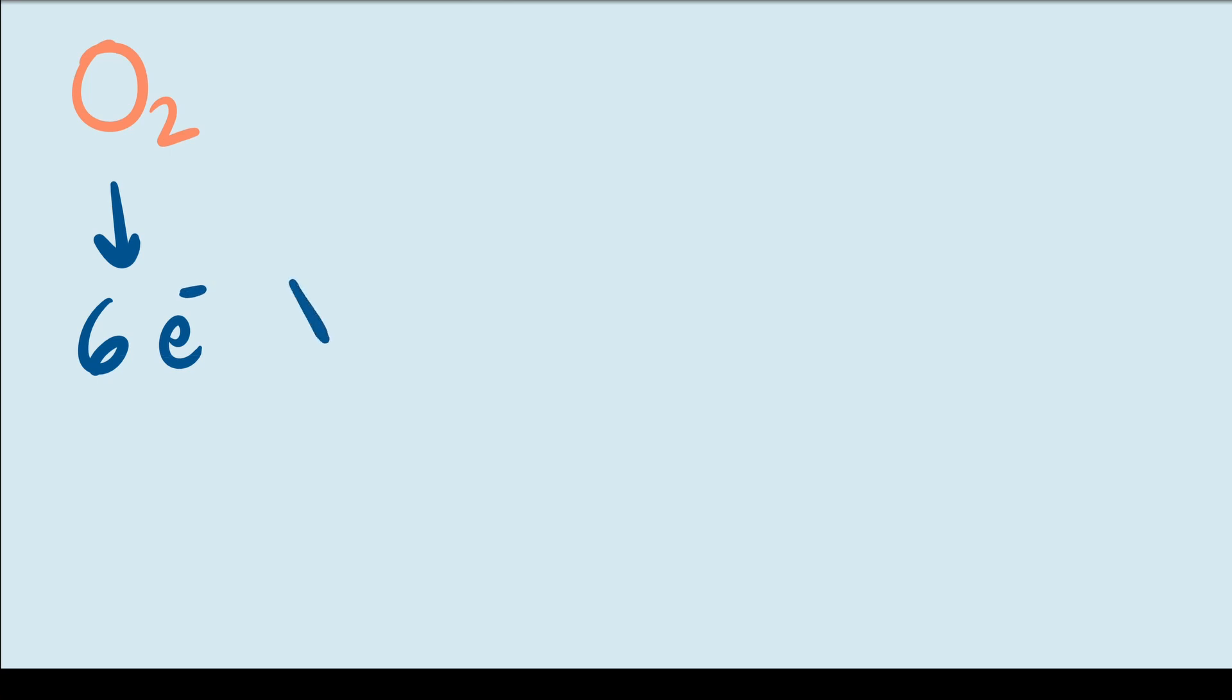And since we have two of them, I am going to multiply by two and that gives us 12 valence electrons that we need to use up in our molecule.